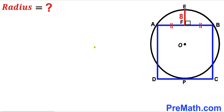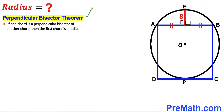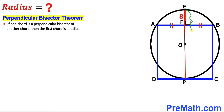Let's get started. First, let's recall the perpendicular bisector theorem: if one chord is the perpendicular bisector of another chord, then the first chord passes through the center. So if we extend segment EF all the way to the point of tangency P, it will pass through center O, and that segment will be our radius, labeled lowercase r. Similarly, OB is also radius r.